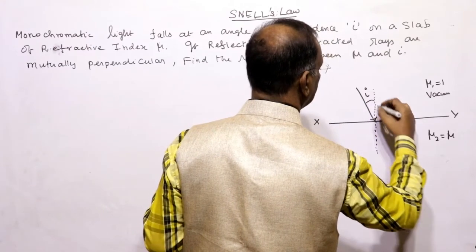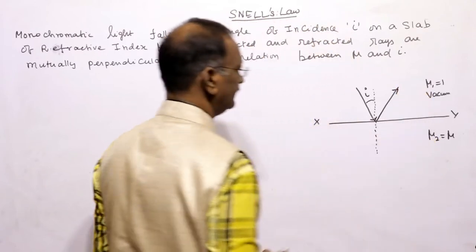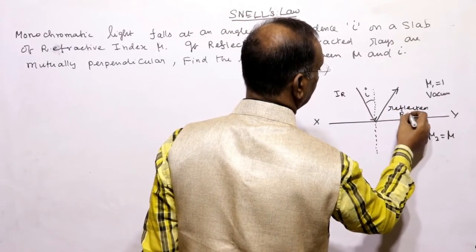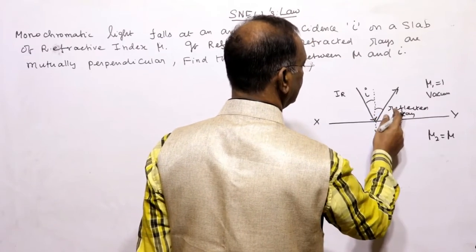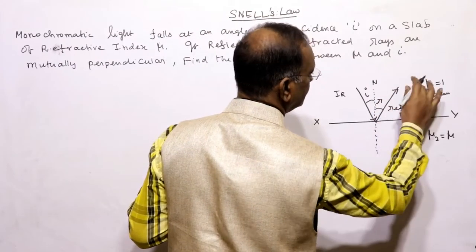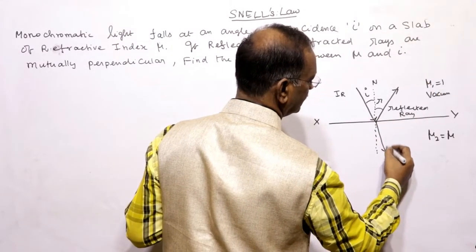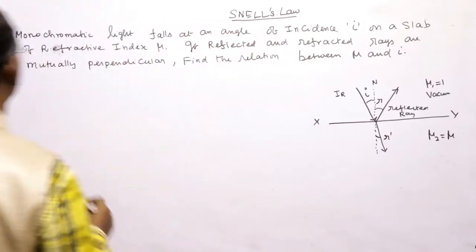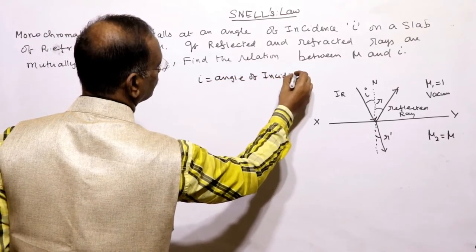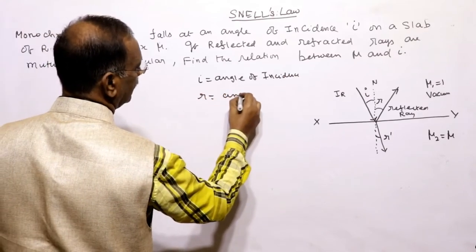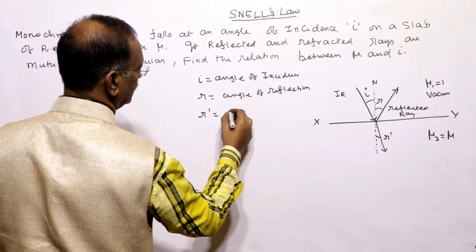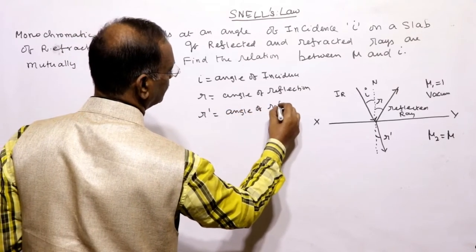The incident ray makes an angle of incidence i with the normal. It is also reflected; the reflected ray makes angle r with the normal. Since light goes from rarer to denser medium, it bends towards the normal, and the refracted ray makes angle r' with the normal. So: i = angle of incidence, r = angle of reflection, r' = angle of refraction.